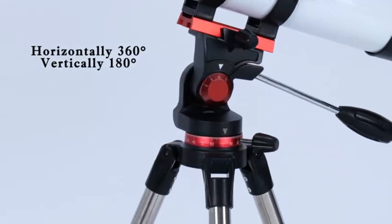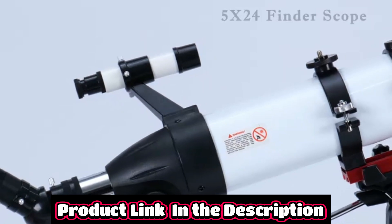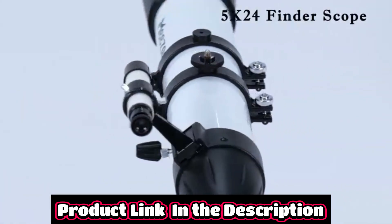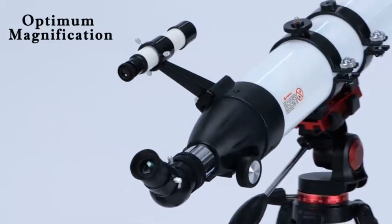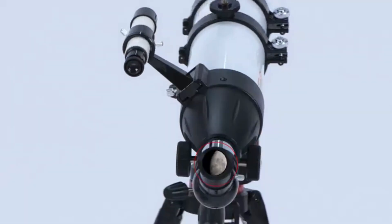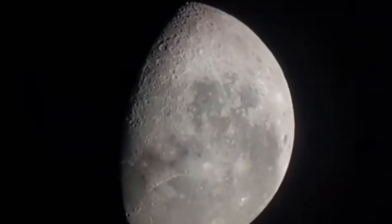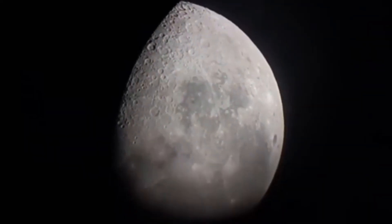Optimum Magnification 32x240x Telescope for Adults High Powered is equipped with two eyepieces, 10mm and 25mm, and a 3x Barlow lens. The 3x Barlow lens triples the magnification of each eyepiece, allowing us to observe unprecedented lunar details.